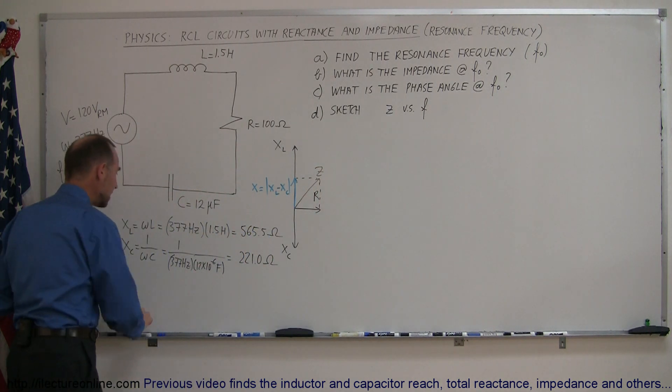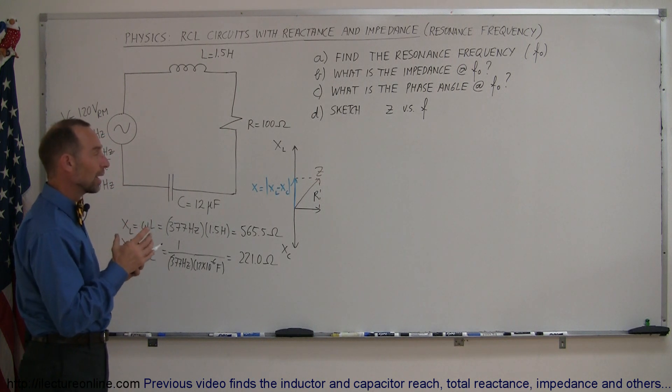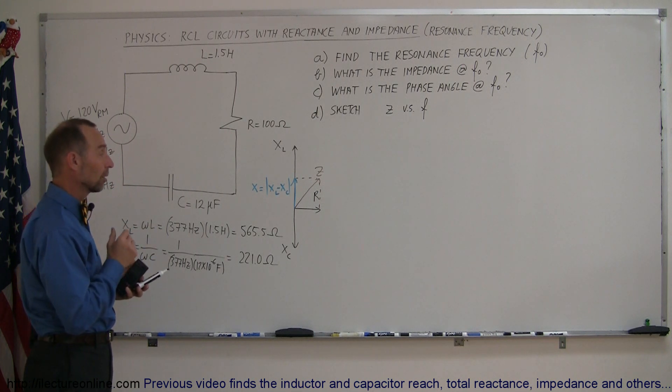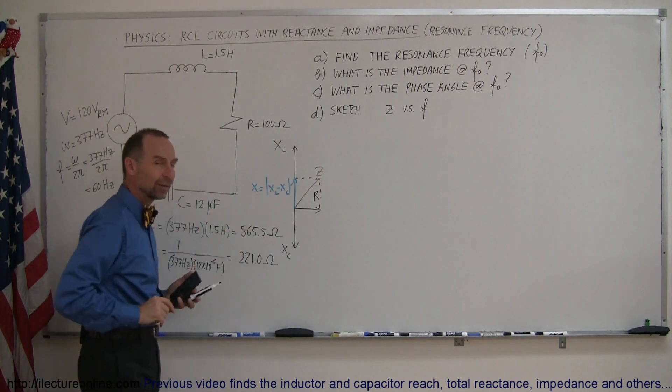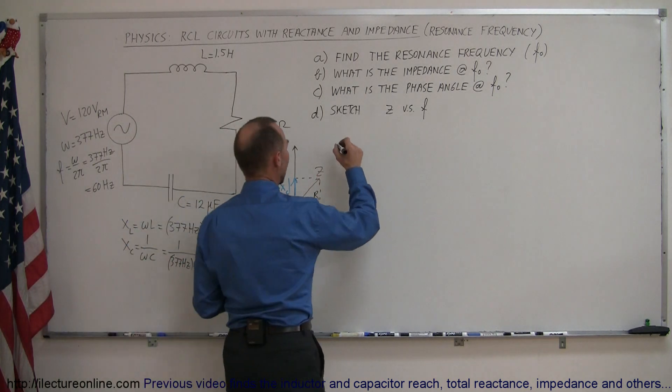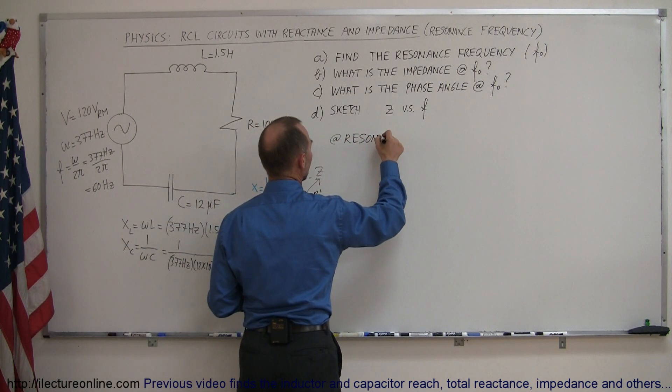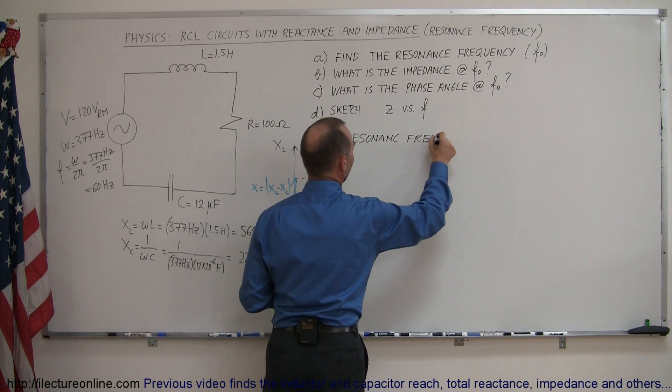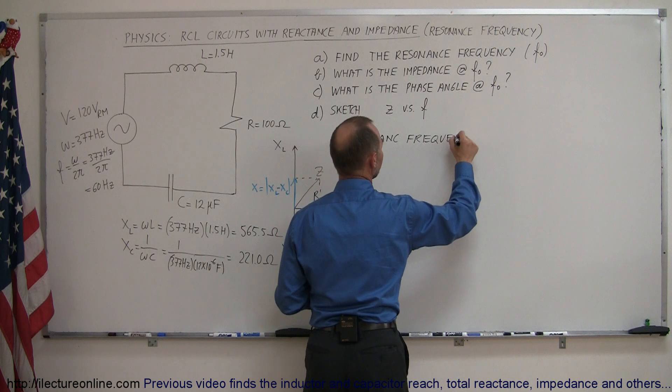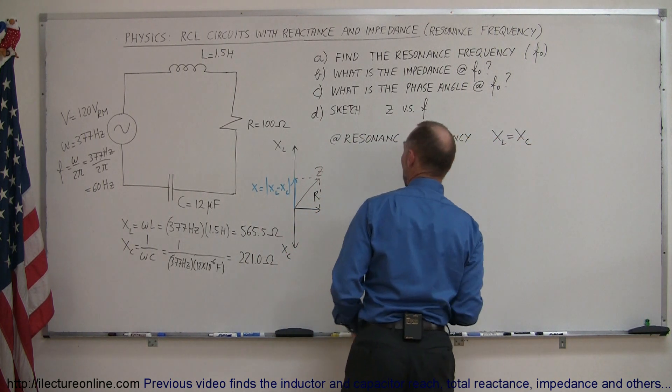So to find the resonance frequency of the circuit, we have to find a way to get rid of the reactance, which means that at the resonance frequency, X sub L equals X sub C.